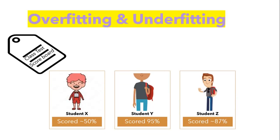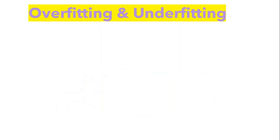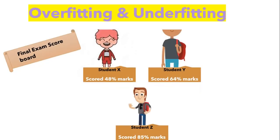Here is the scorecard of each student. Student X, who was not interested in paying attention, scored approximately 50% marks by only guessing the answers. Student Y, who memorized everything, was able to score more than 90% marks. Student Z solved questions using a problem-solving approach and scored almost 87% marks. We can clearly infer that the student who simply memorizes everything is scoring better without much difficulty. Now let's introduce a twist — let's also look at what happens during the final exam.